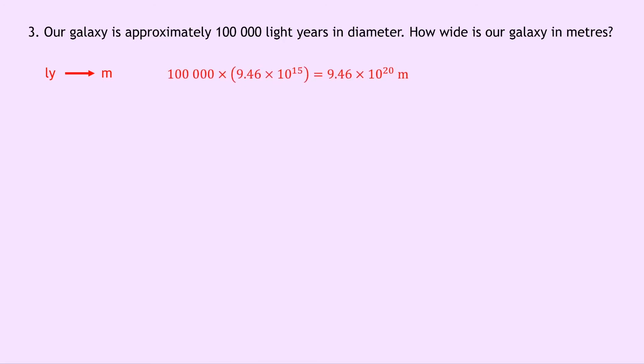So we're going to do 100,000 times 9.46 times 10 to the 15. Remember that is how many metres are in one light year. If you didn't remember that then you can arrive at this number by using speed distance time. And if you put that into your calculator you should get an answer of 9.46 times 10 to the 28 metres.